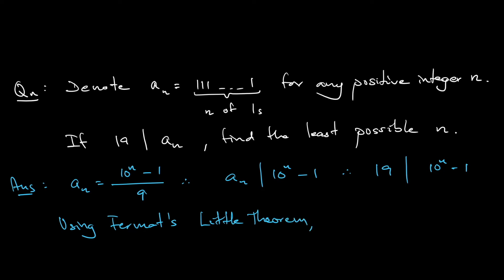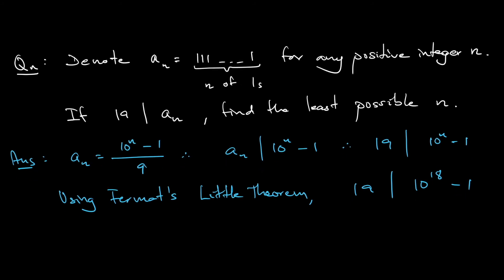Because 19 is a prime number, 19 divides 10^(p-1), so that's 10^18 - 1. That means we have 10^n congruent to 1 mod 19.